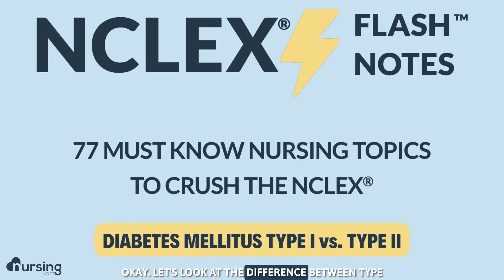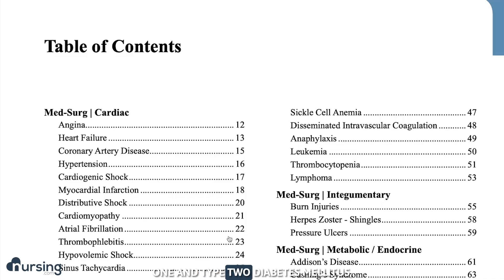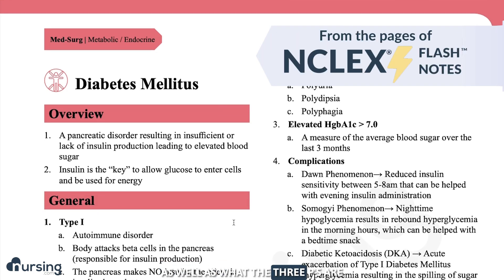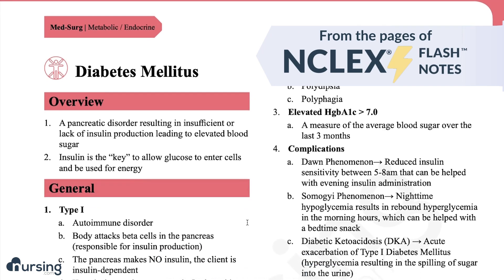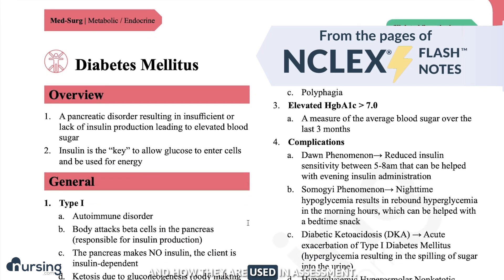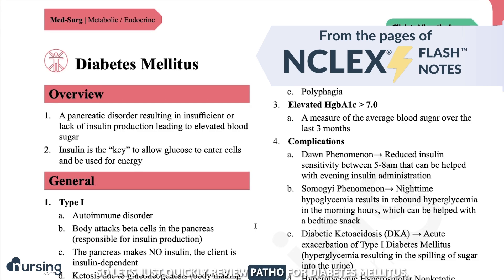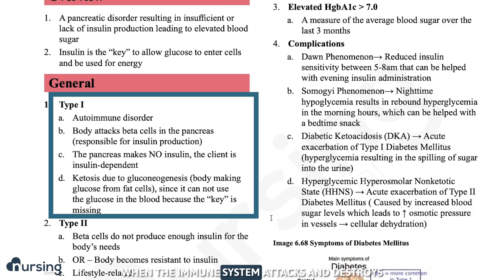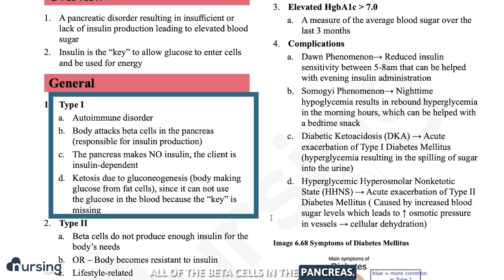Let's look at the difference between type 1 and type 2 diabetes mellitus, as well as what the three P's are and how they are used in assessment. In type 1 diabetes, the immune system attacks and destroys all of the beta cells in the pancreas, and the patient has absolutely no insulin production and is dependent on supplemental insulin.